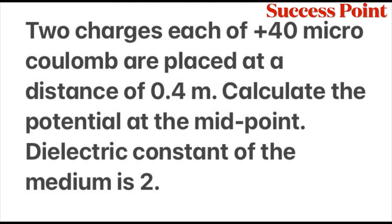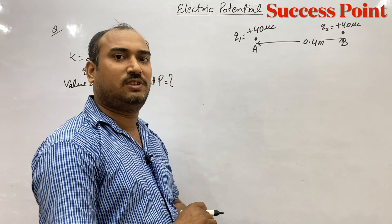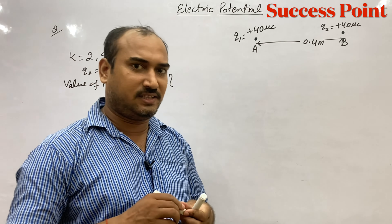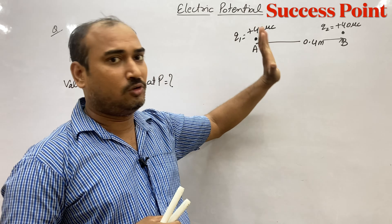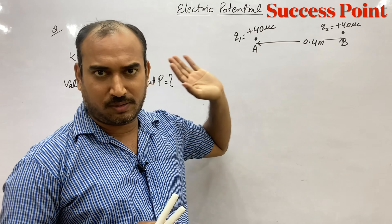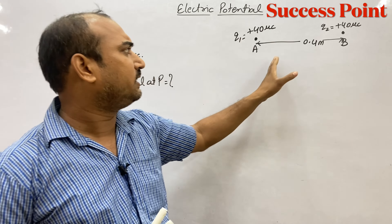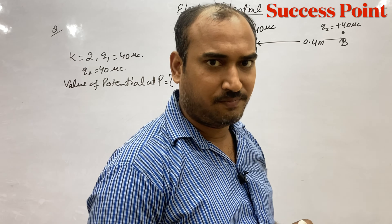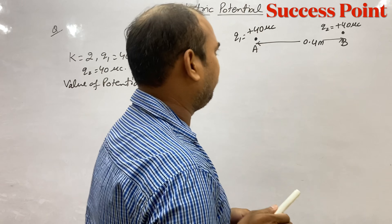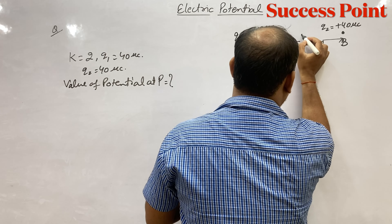Ab dekhiye bacho, electric potential ka next question yeh hai ki: 2 charges each of plus 40 micro coulomb are placed at a distance of 0.4 meter. Calculate the potential at the midpoint. Dielectric constant of the medium is 2. To bacho, yeh question hamko diya hai ki 2 point charges hain Q1 aur Q2, dono ke charge ki value plus 40 micro coulomb, ek dusre se 0.4 meter distance pe.